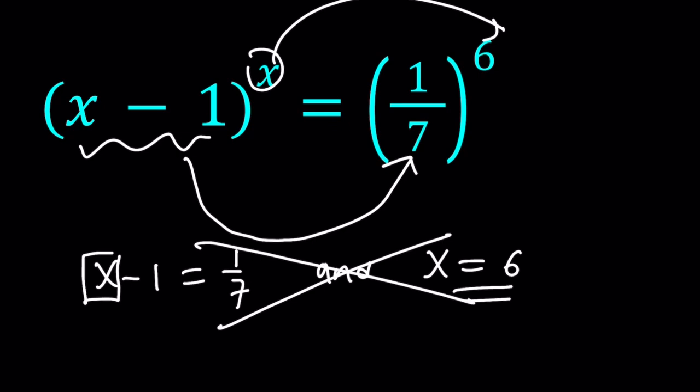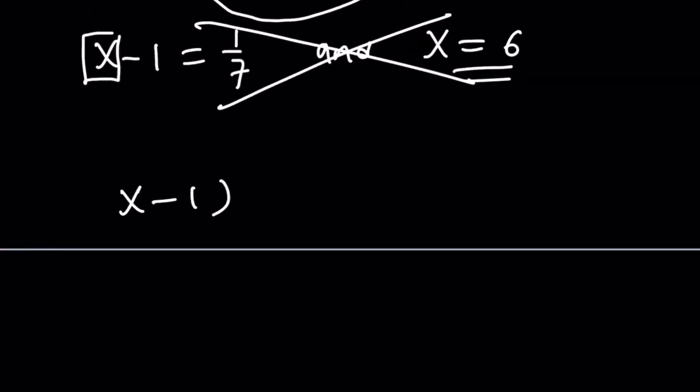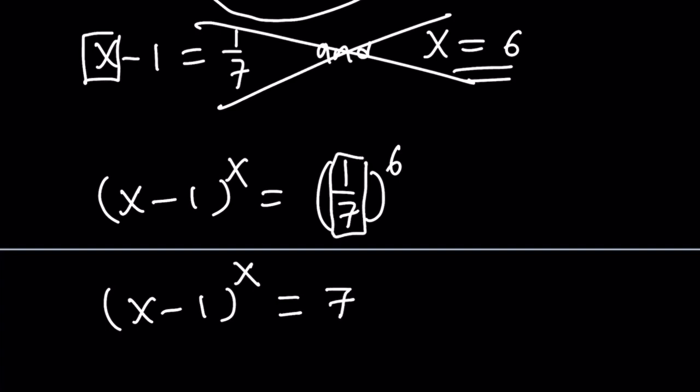So as is, we can't find a direct solution. Let's go ahead and manipulate this a little bit. The first thing, and I'm going to rewrite the original problem for you, the first thing that comes to mind is to turn this into a negative exponent. Why? First of all, I don't want this to be a fraction. So let's write it as 7 to the power negative 6. Makes sense? The rule is 1 over x to the power n can be written as x to the power negative n.